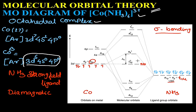The ligand brings six pairs of electrons. For Co^3+, we have a d^6 system with six electrons in the 3d orbital. The energy of ligand orbitals is lower compared to the metal, so bonding molecular orbitals have the character of the ligand, antibonding molecular orbitals have the character of the metal, and the non-bonding orbitals are purely metallic in character.